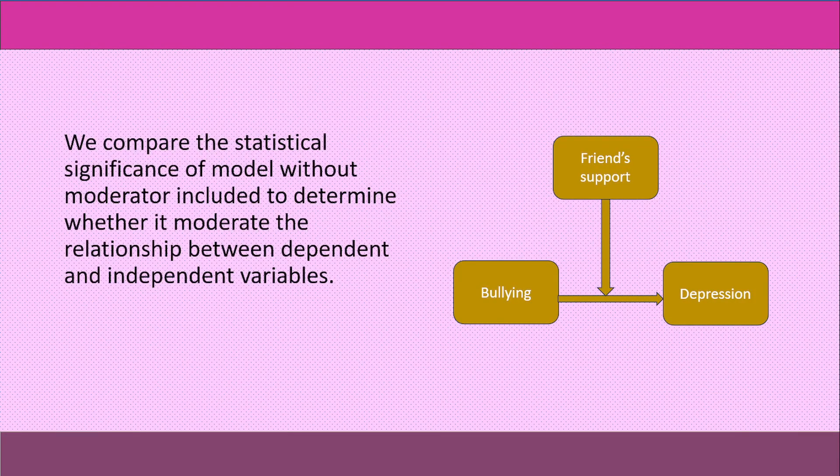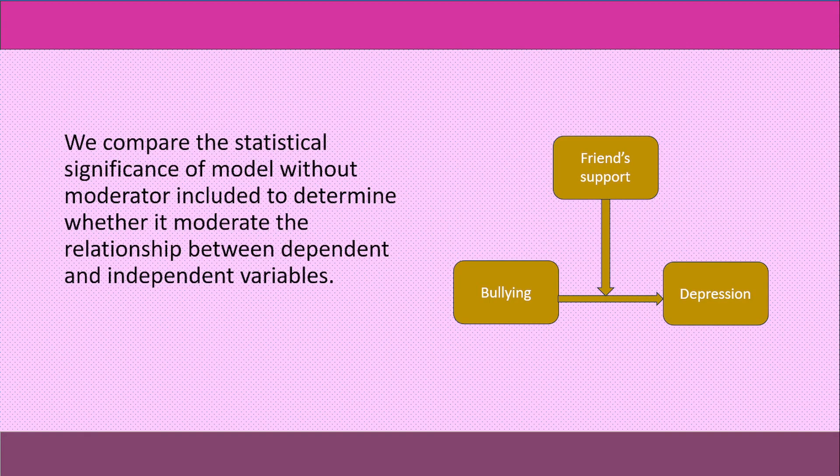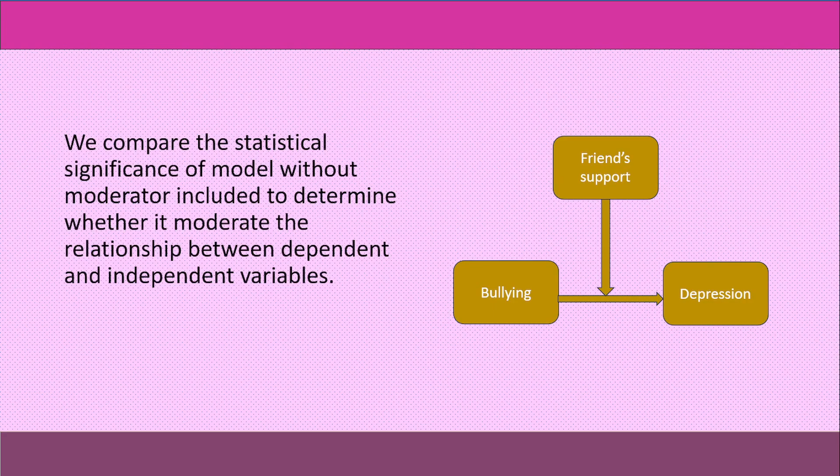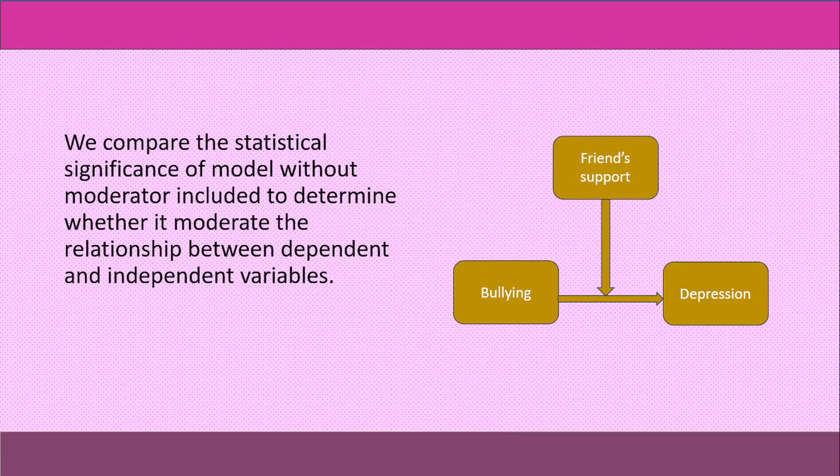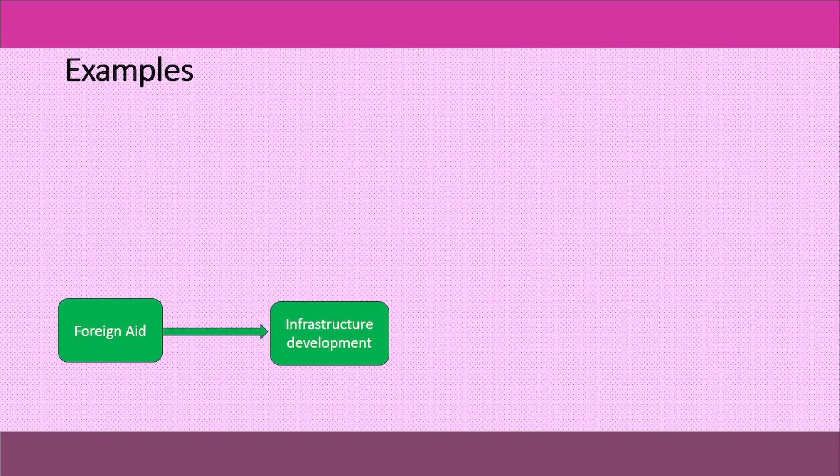If it improves or strengthens the relationship compared to the previous model, then we use it as a moderator. If the statistical relationship of the first model is already high, then we don't need to include a moderator. Some other examples of moderators are given here.